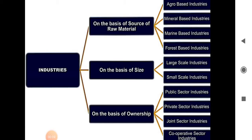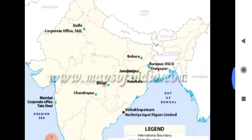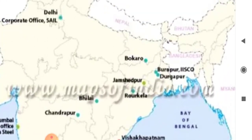Hello viewers. Today's topic is industries. Industries are generally classified on the basis of site, ownership, raw material, etc. According to your syllabus, agro-based industries and mineral-based industries are covered. Mineral-based industries are those which receive their raw materials from minerals — for example, the iron and steel industry. The iron and steel industry in Jamshedpur is a key example.